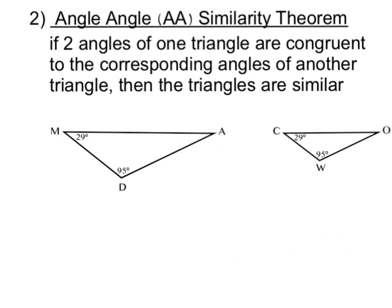We are ready to talk about our next triangle similarity theorem. This one is called the Angle-Angle similarity theorem. This theorem states that if two angles of one triangle are congruent to the corresponding two angles of another triangle, then those triangles are similar.